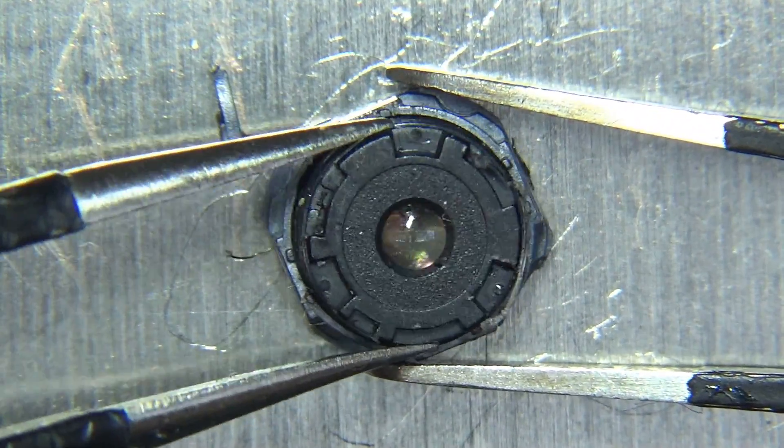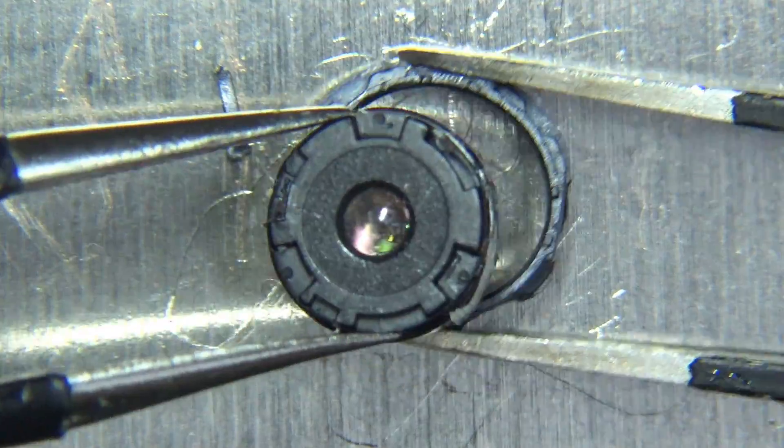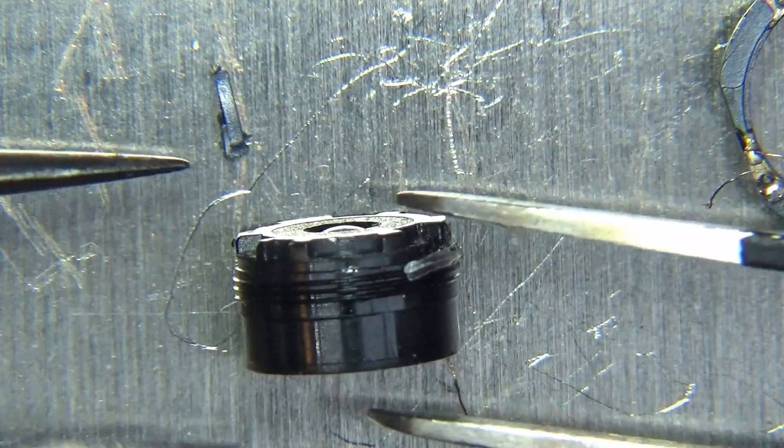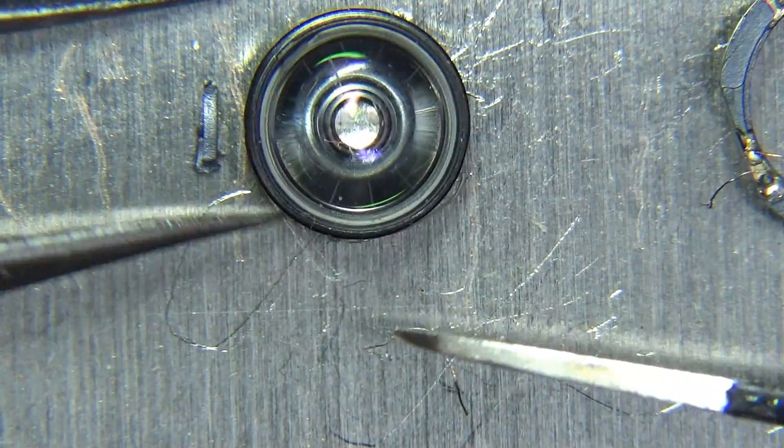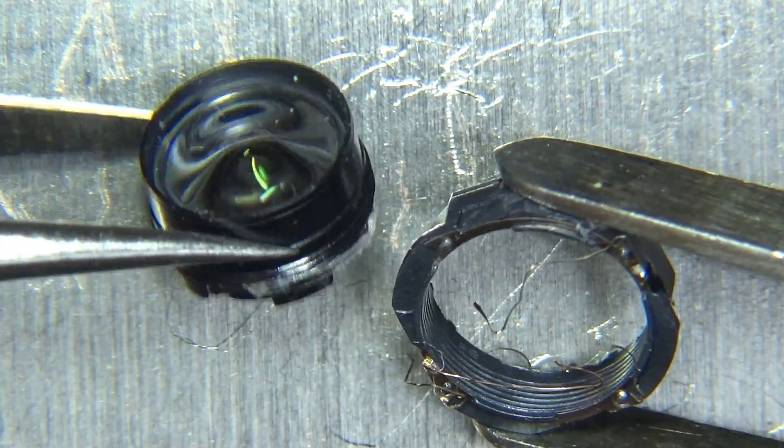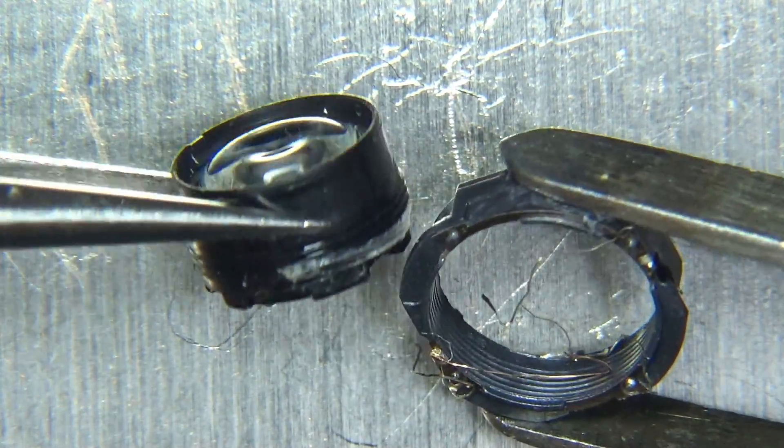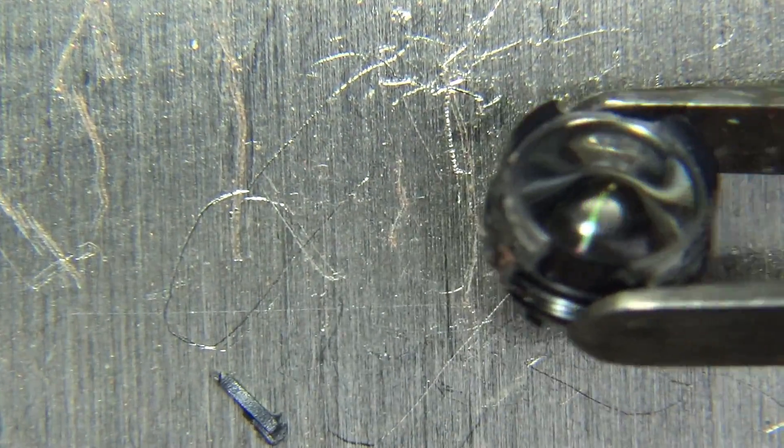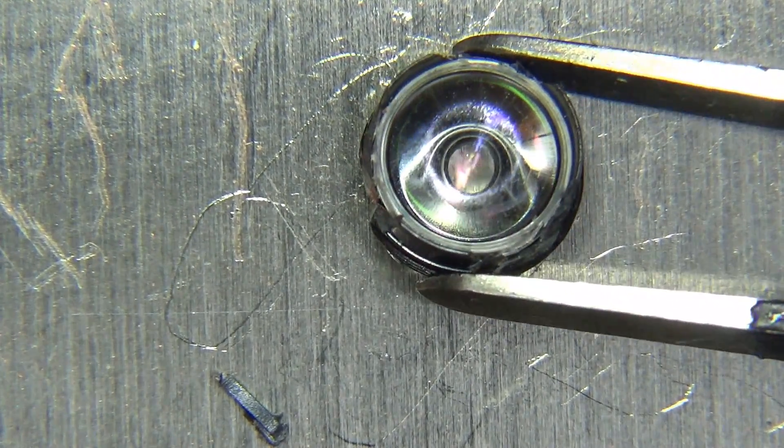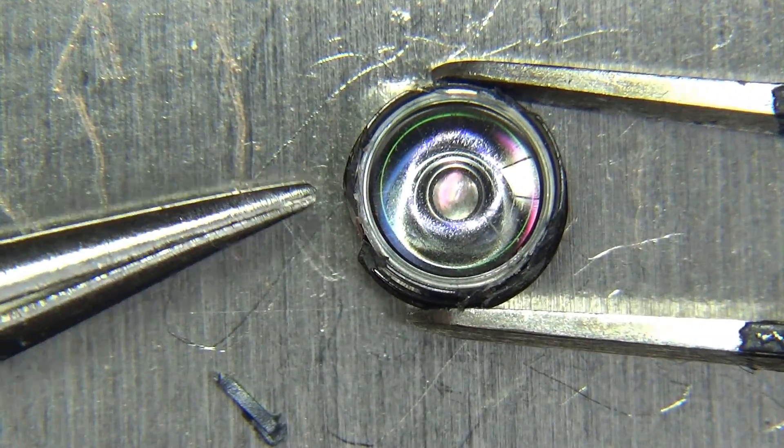And it took a little bit of forcing it. But eventually it did separate and still both of the lenses are stuck together. Yeah, you can see the thread on the inside. And there's a little bit of thread here. So it was threaded in.